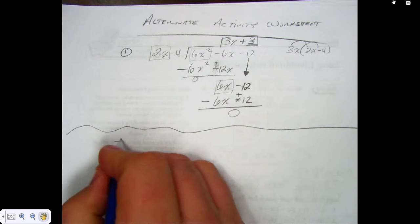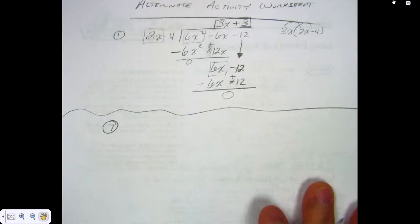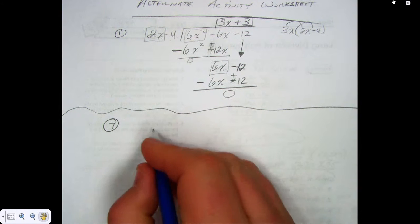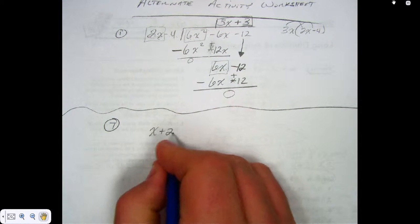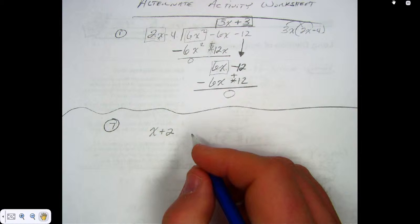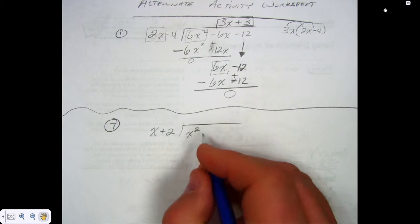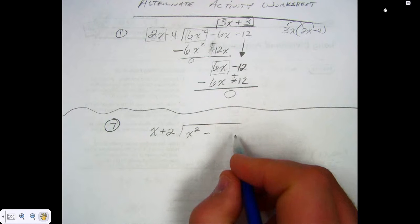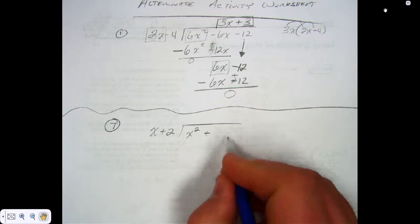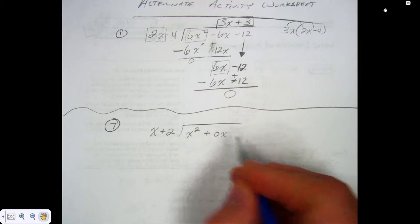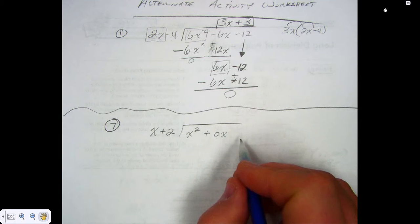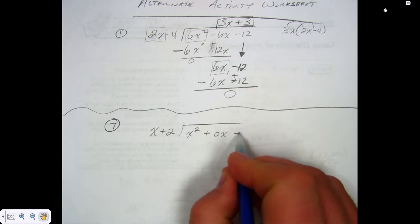Let's do number 7. Now, when there's a missing term, what do I put? So 0x minus 4.